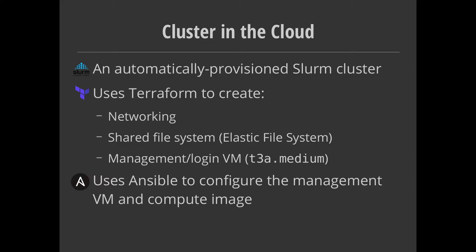The second layer on top of the infrastructure is Ansible, used for configuration management. It installs all the software needed to manage users, mounts all the file systems, creates the compute image that will be used by compute nodes when they're started, and does all the firewalling in between to try and make it a secure environment.